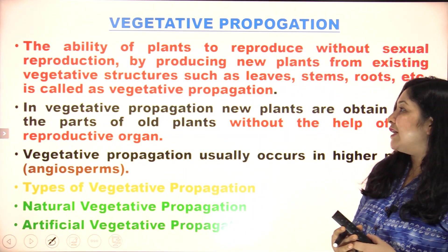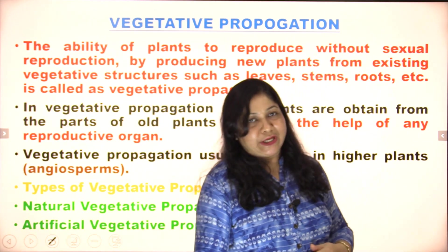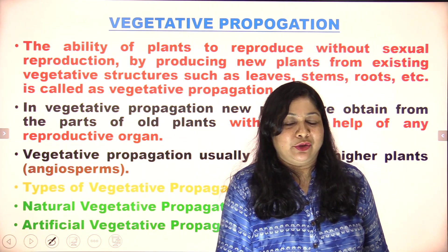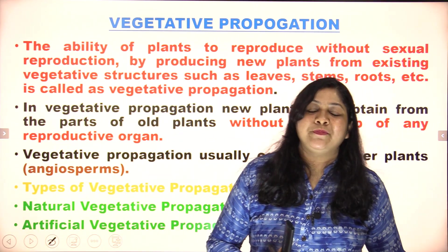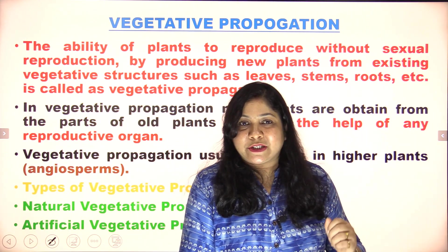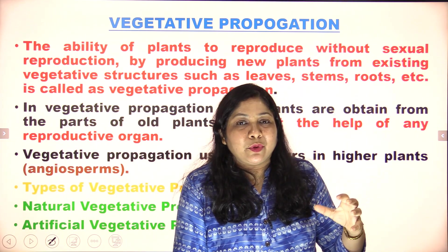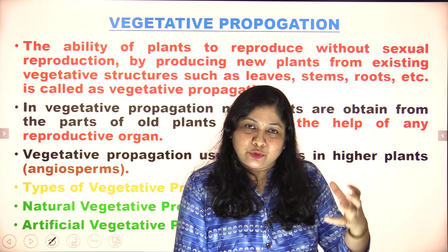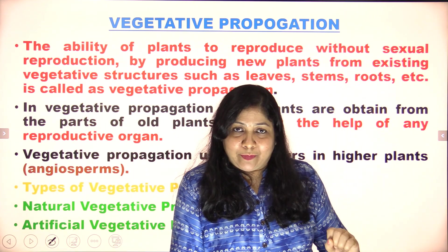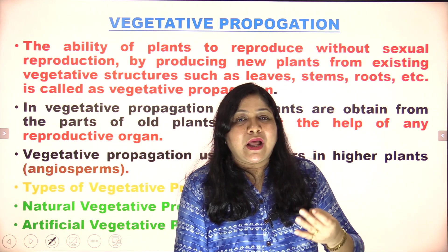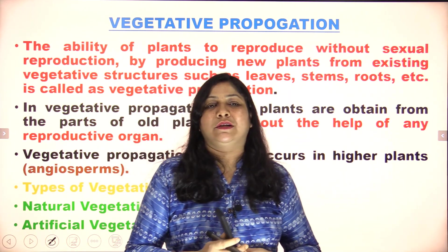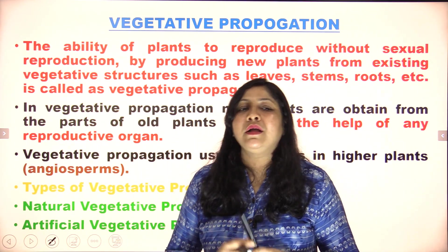Next is vegetative propagation. By using the non-sexual parts of a plant body — such as roots, stem, or leaves — you can create a new plant. This type of propagation method is called vegetative propagation. The plant body is not going to use any sexual reproduction method here. Leaves, stems, and roots — all these vegetative parts can produce new plants by the process of vegetative propagation.